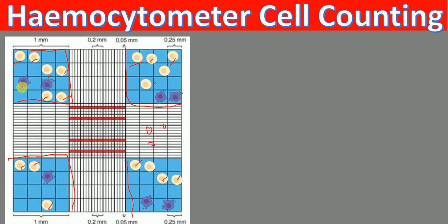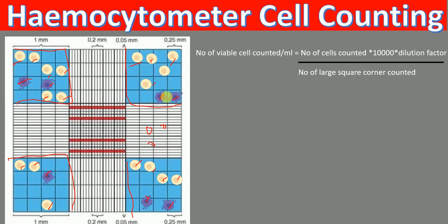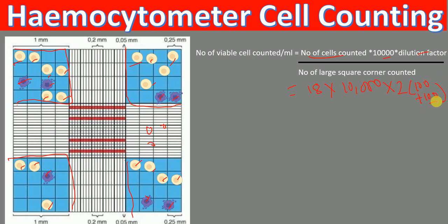Now let's count dead cells: 1, 2, 3, 4, 5, 6, and 7. So the number of dead cells counted are 7. To determine the total number of live cells per mL, we have the formula: number of cells counted multiplied by 10,000, multiplied by dilution factor, divided by number of large corner squares counted. The dilution factor is 2 because we used 100 microliters of trypan blue and 100 microliters of cell suspension — that is a 1-to-2 dilution. We divide by 4 because that is the number of large corner squares counted.